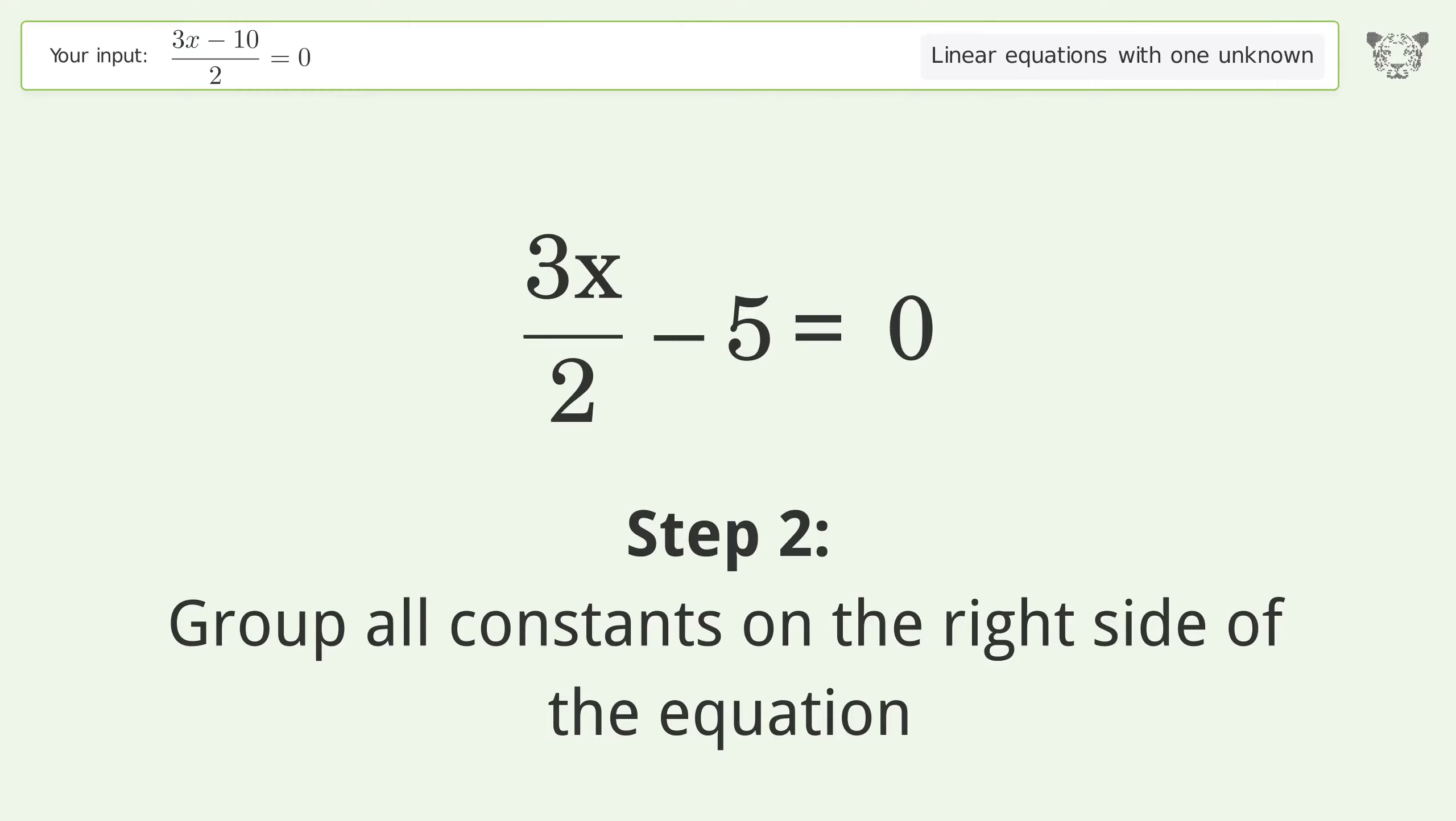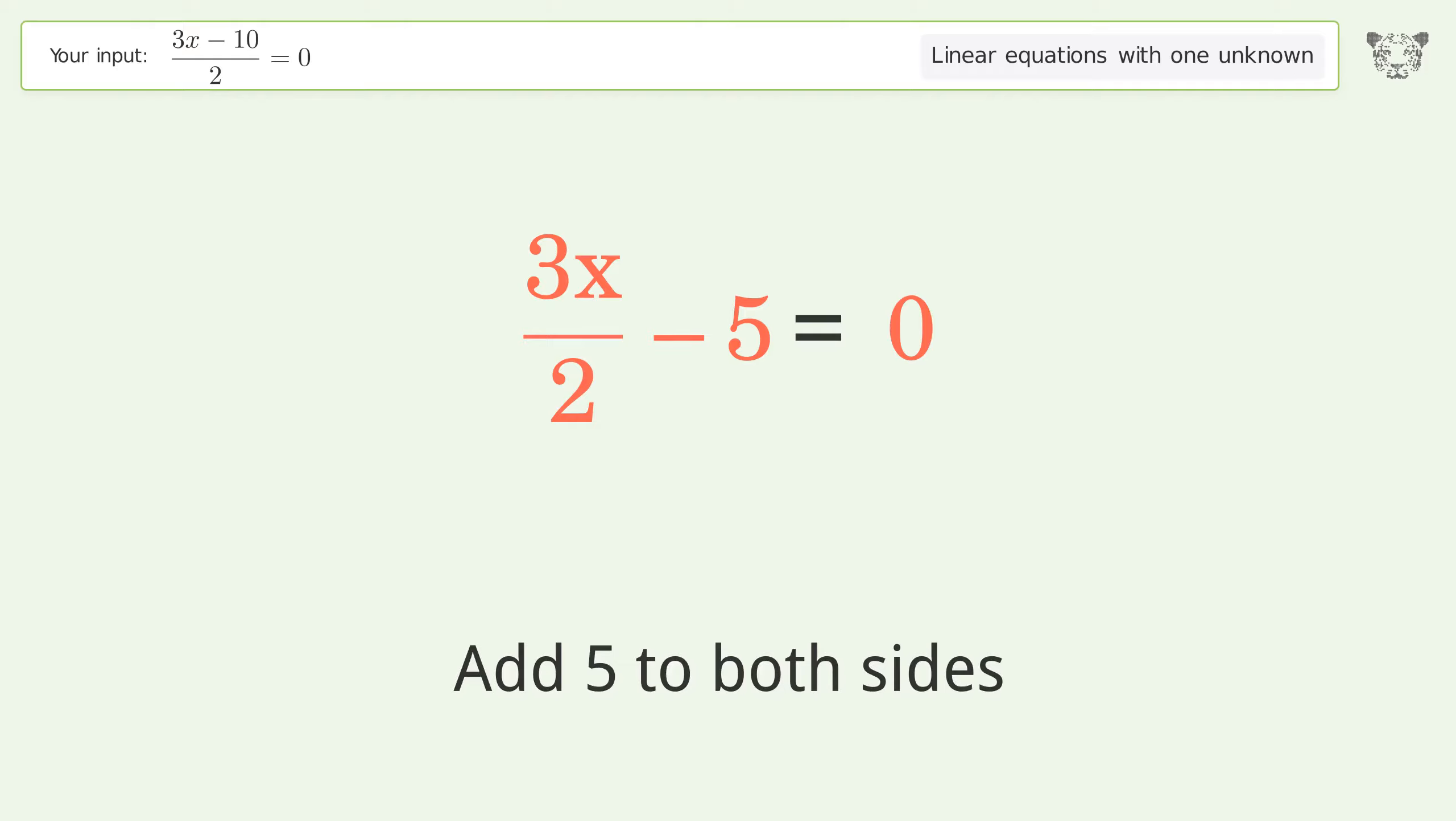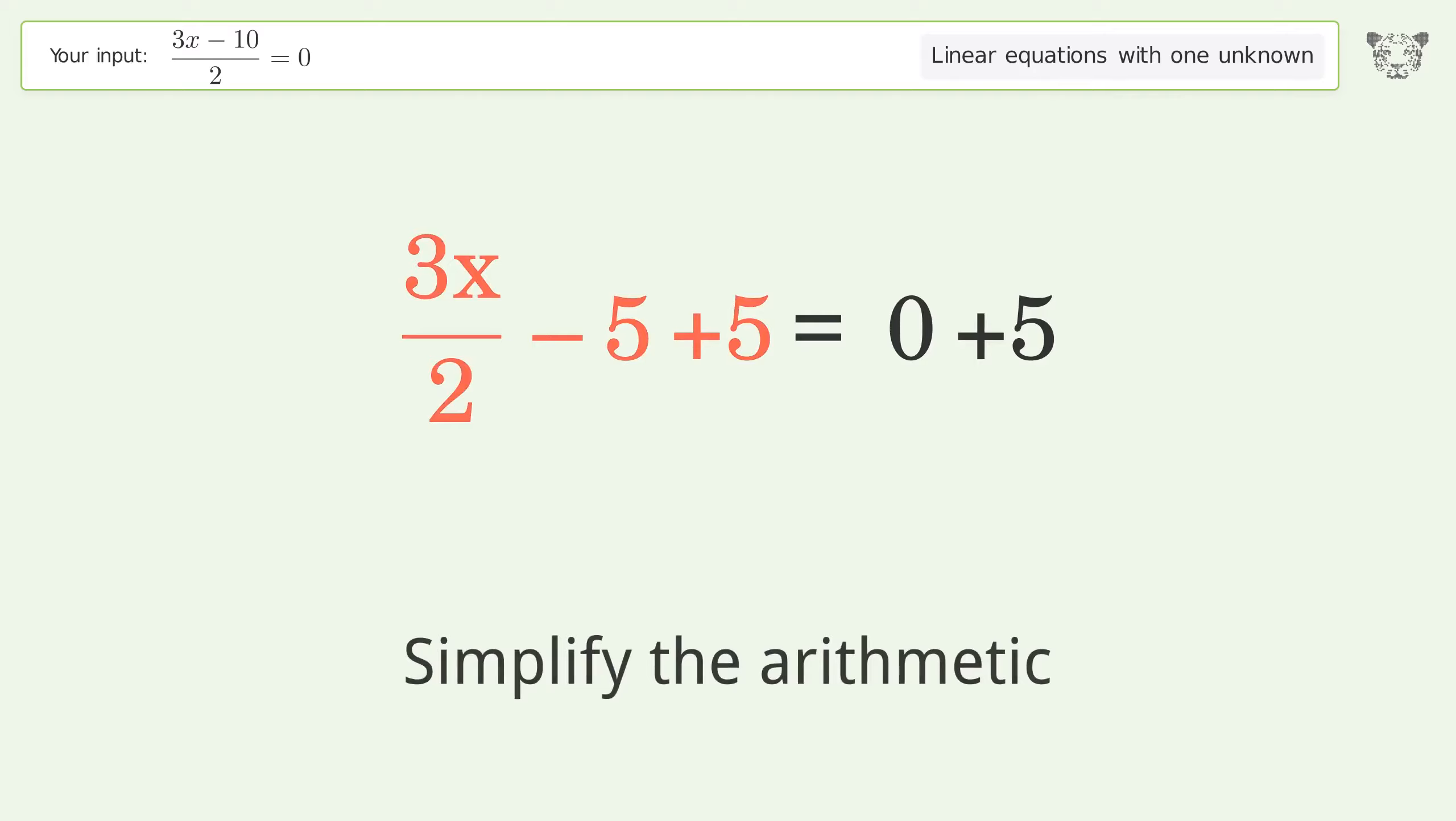Group all constants on the right side of the equation. Add 5 to both sides. Simplify the arithmetic.